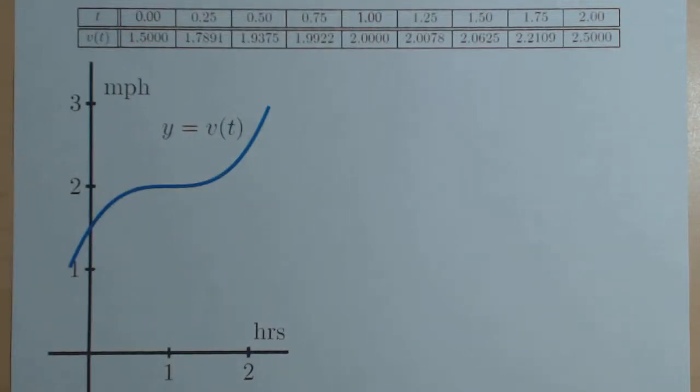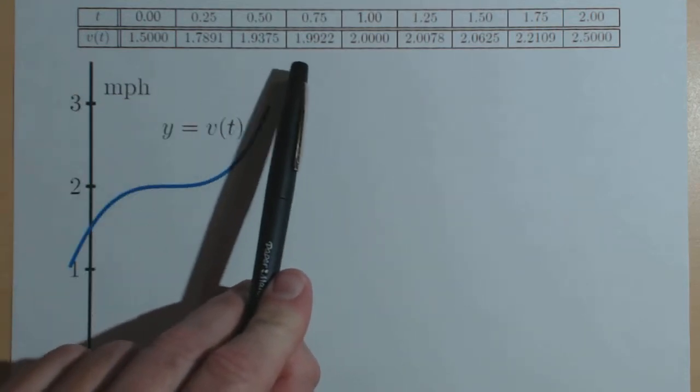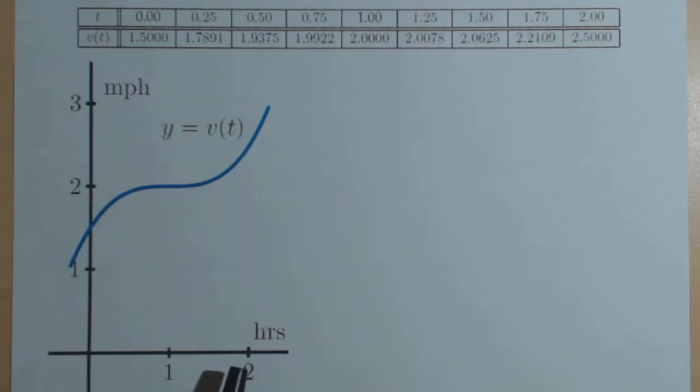In activity 4.1, we have a situation where velocity is varying. We're given a table that gives their velocity at certain times and also a graph of the person's velocity as a function of time.